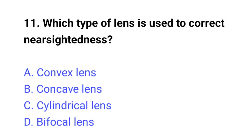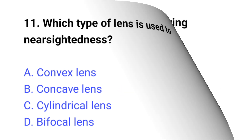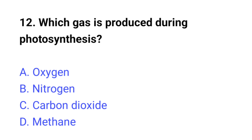Question number eleven: which type of lens is used to correct nearsightedness? The right answer is option B, concave lens. Question number twelve: which gas is produced during photosynthesis? The right answer is option A, oxygen.